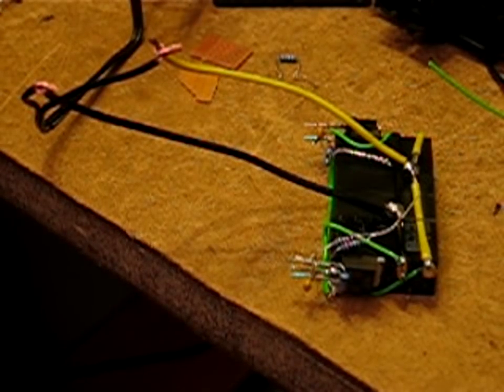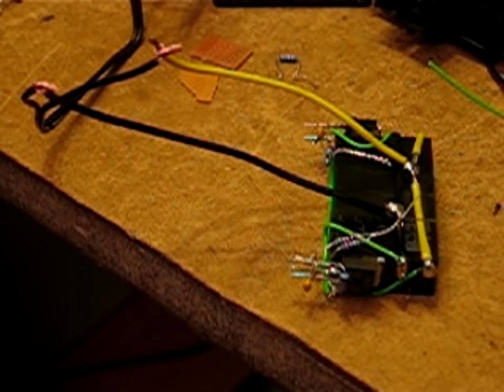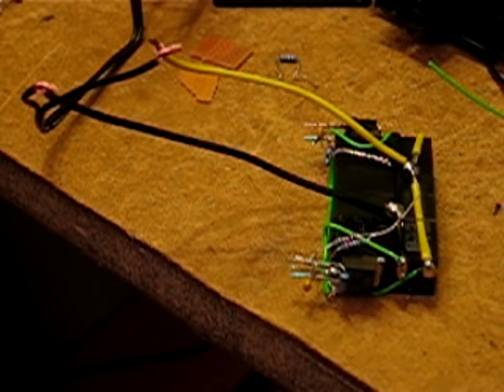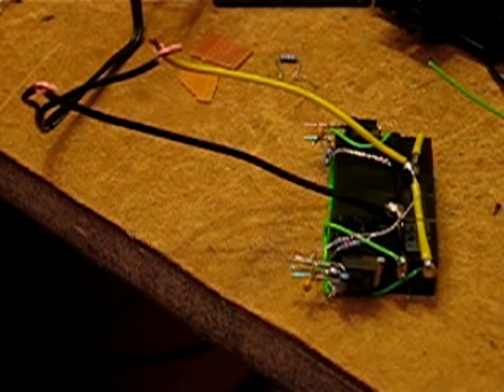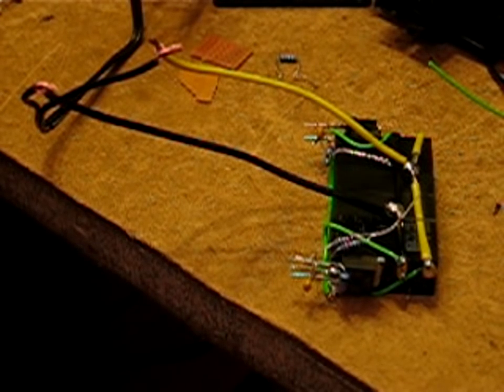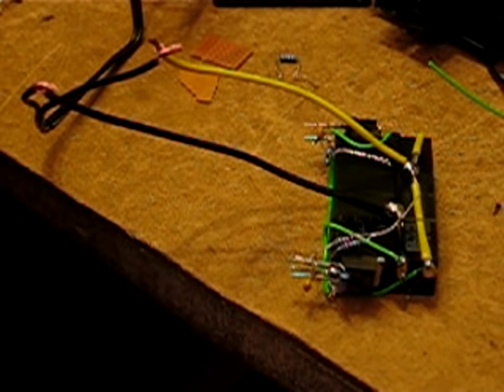This is the first test of the replacement power window control unit I've made for my father's Opel Senator B from 1992. The original unit had failed due to water damage.